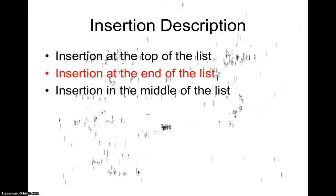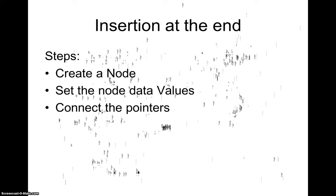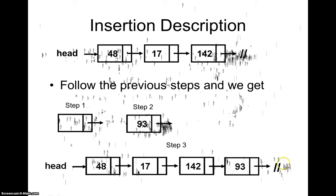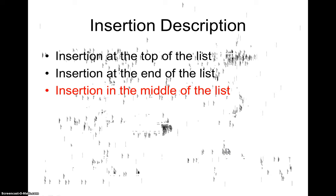Insertion at the end is very similar: create a node, set the data value, then connect the pointers. In an existing linked list where the tail points to null, we set that null pointer to point to the newly created node, and the new node's pointer is set to null. After these two operations, the new node is inserted at the end of the linked list.